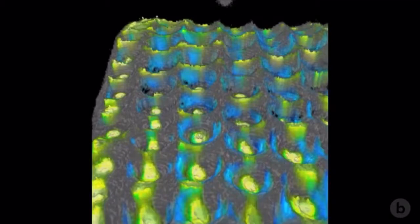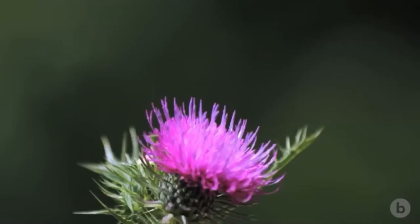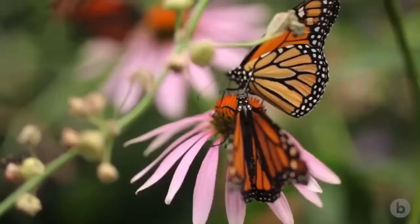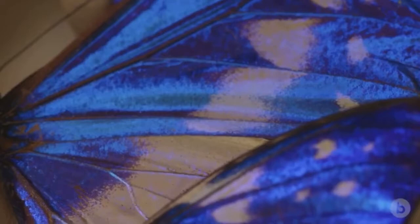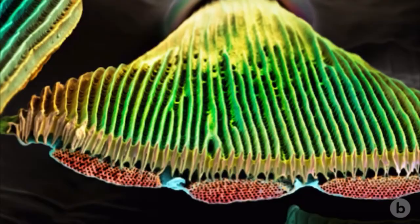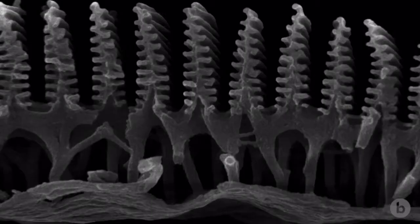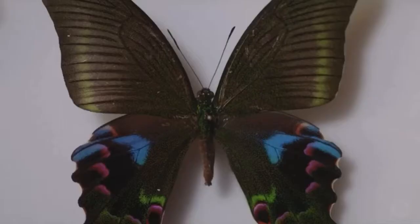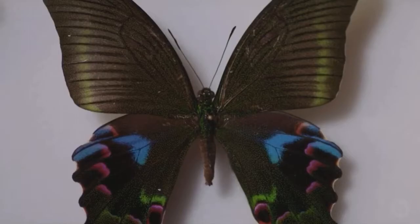Very little is known from the biology side of how the butterfly actually makes these structures. The only two materials butterflies can work with are chitin — the exoskeleton material that they make all of their structures with — spaced by air. And they can blend those two things together to create complex shapes, which then cause light refraction and give the multitude of color that can be created structurally.